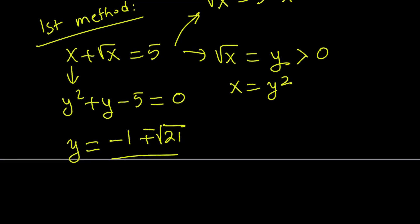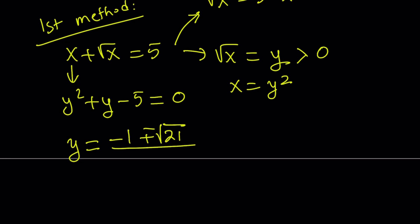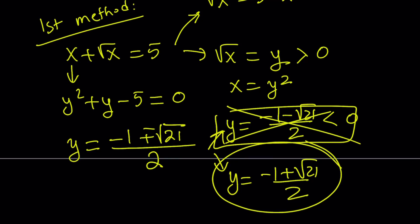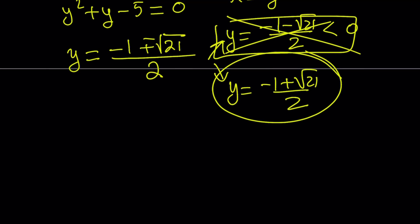So those are the y values, but notice that we get two y values from here. One of them is negative 1 minus square root of 21 divided by 2, and the other one is negative 1 plus square root of 21 divided by 2. The first solution is going to be less than 0, because the numerator is a negative value. Therefore, we're not going to accept it, because y has to be positive. We're going to go with the unique value, which is y equals square root of 21 minus 1 divided by 2.